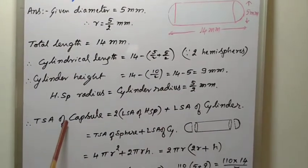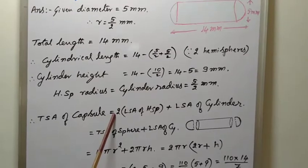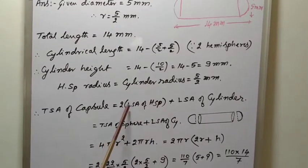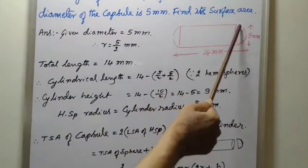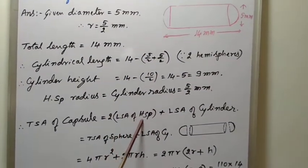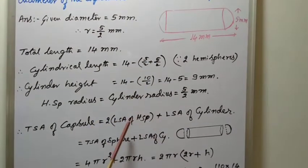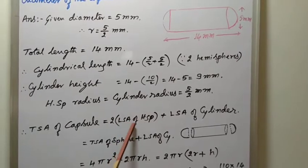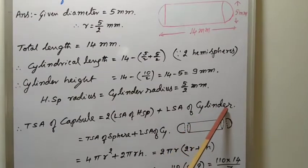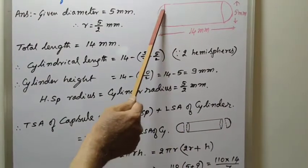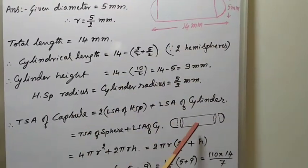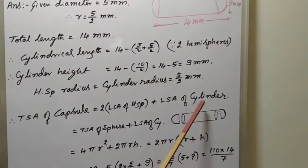Now, use formula. Total surface area of capsule equals 2 into LSA of hemisphere. Why we took 2? This is 1 hemisphere and this is another hemisphere. Therefore, 2 into lateral surface area of hemisphere, 2 parts. 2 into LSA of HSP plus lateral surface area of cylinder. Because, this part we are not considering, this part also not considering. Only lateral surface area of cylinder is considering, LSA of cylinder.